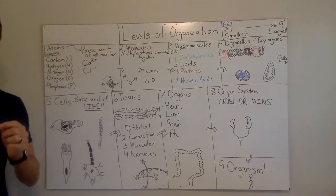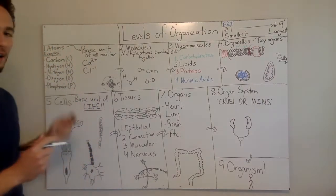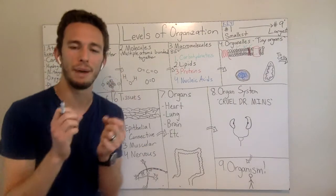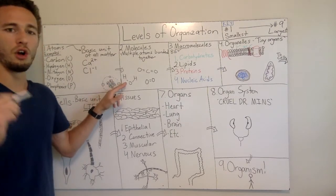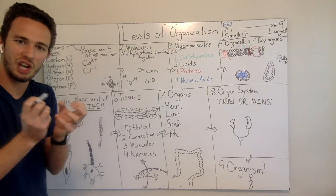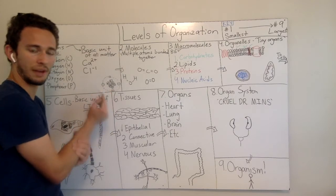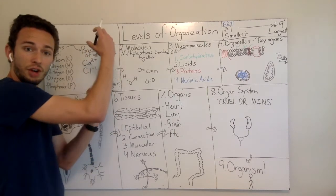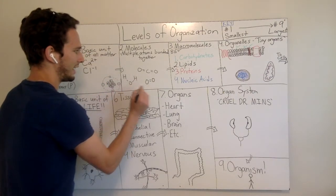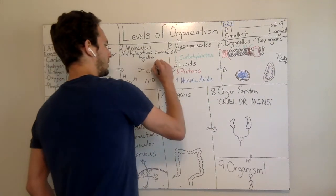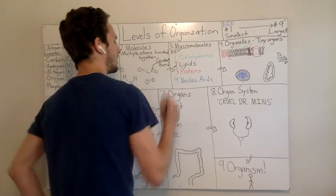So those are atoms. Now, when we put atoms together, we create what's called molecules. And whenever I say put them together, it means that they are bonding. And most of the time when we're talking about biology, we're going to say that these are covalent bonds. That means they are sharing electrons between one another.